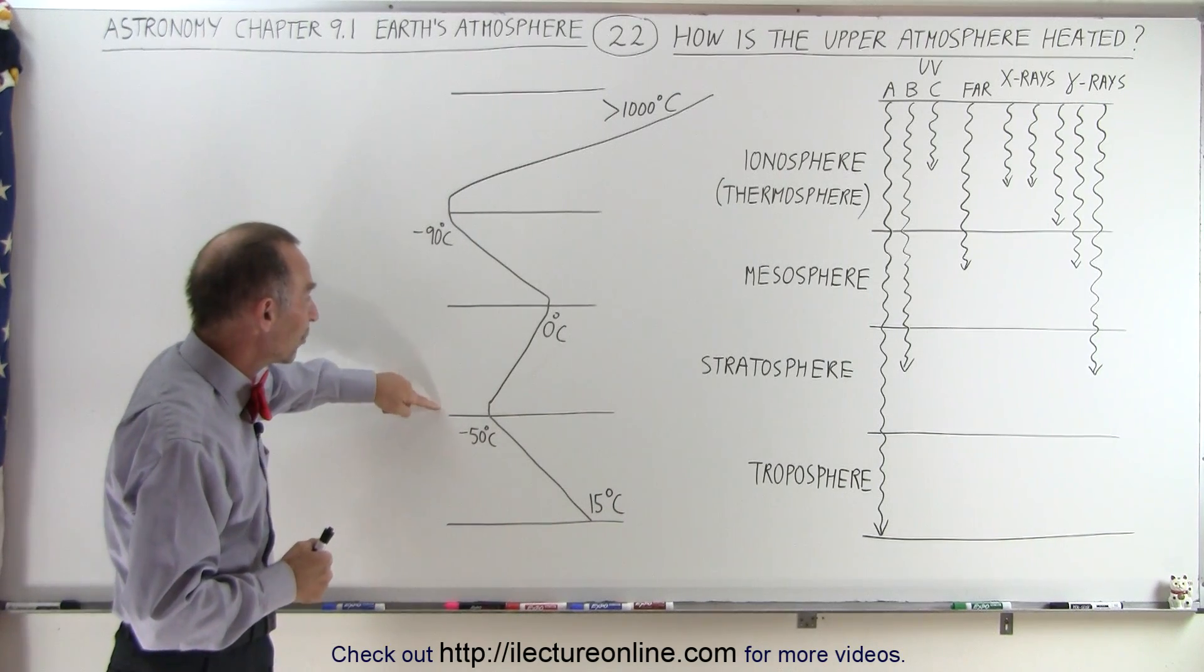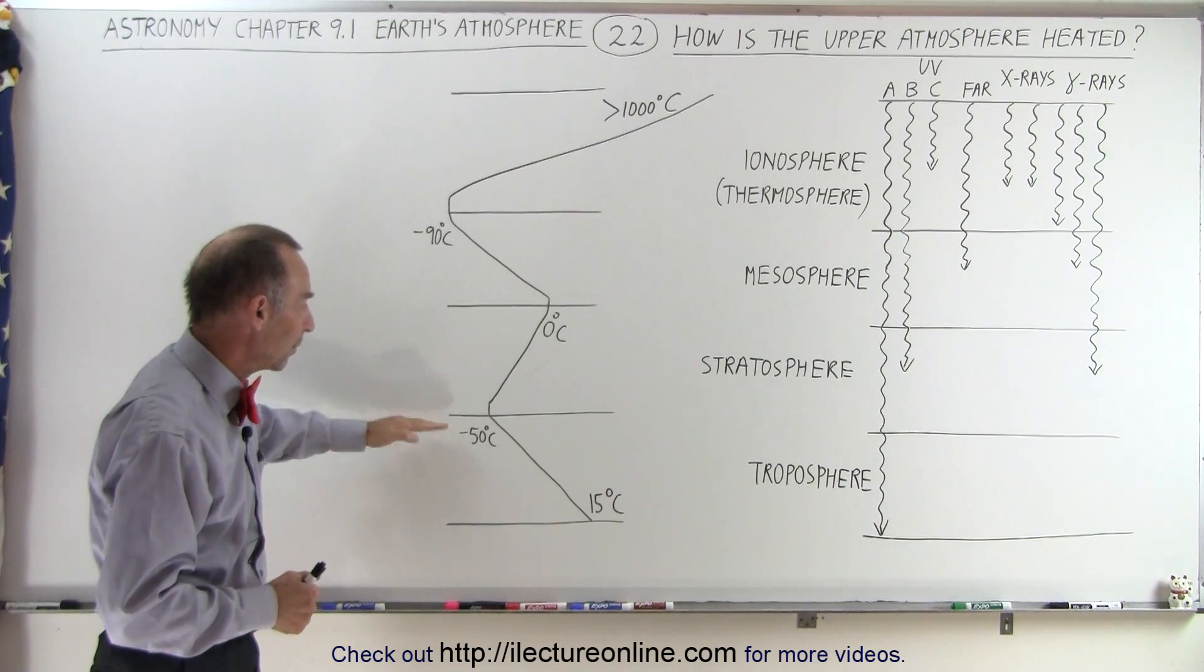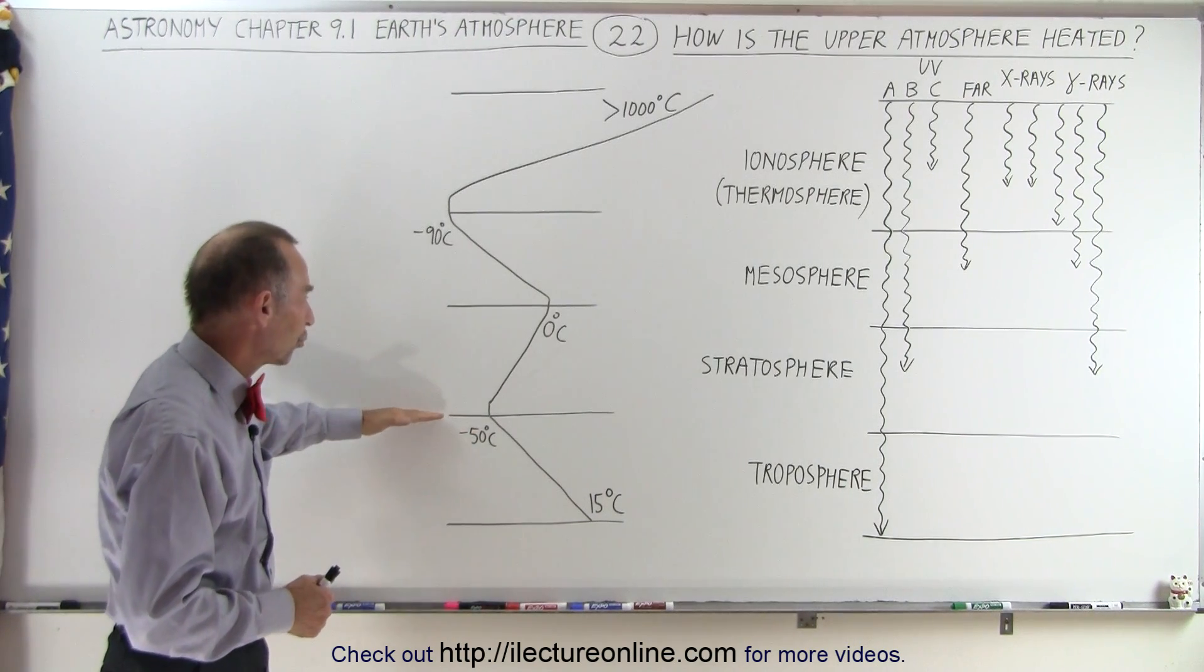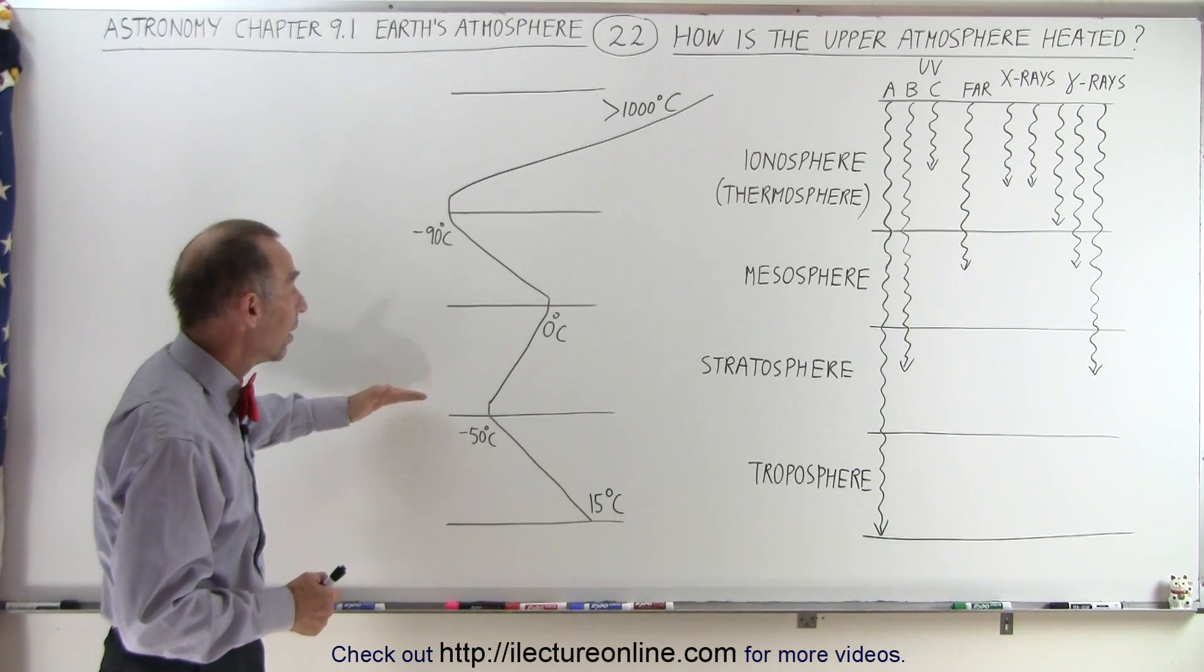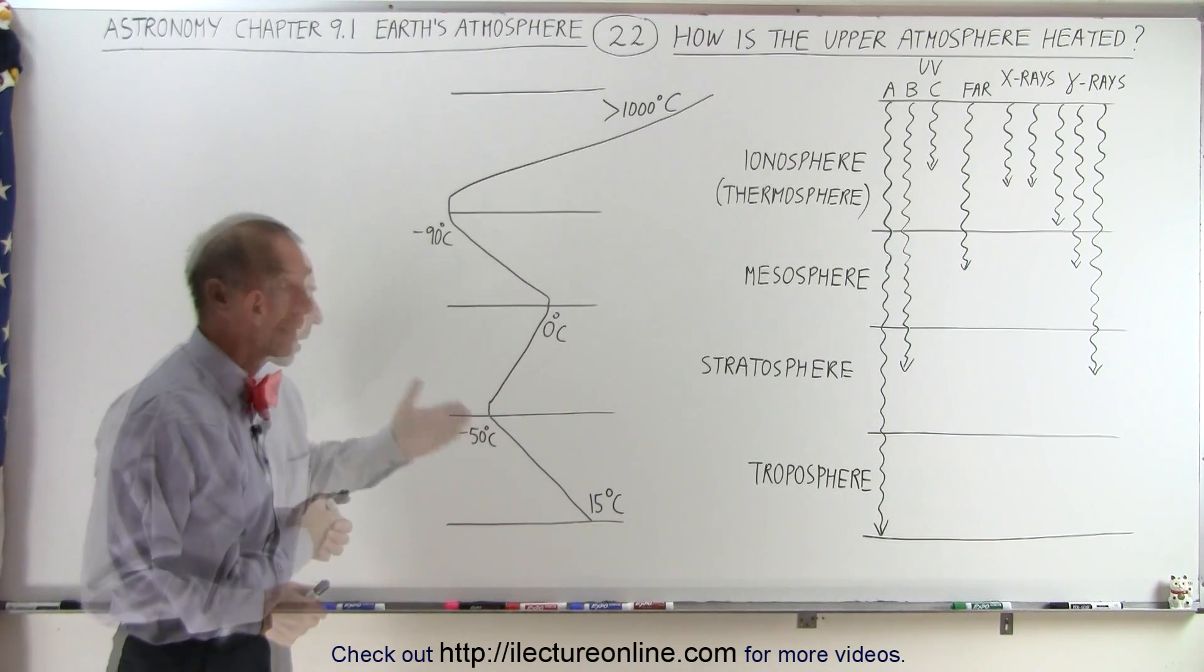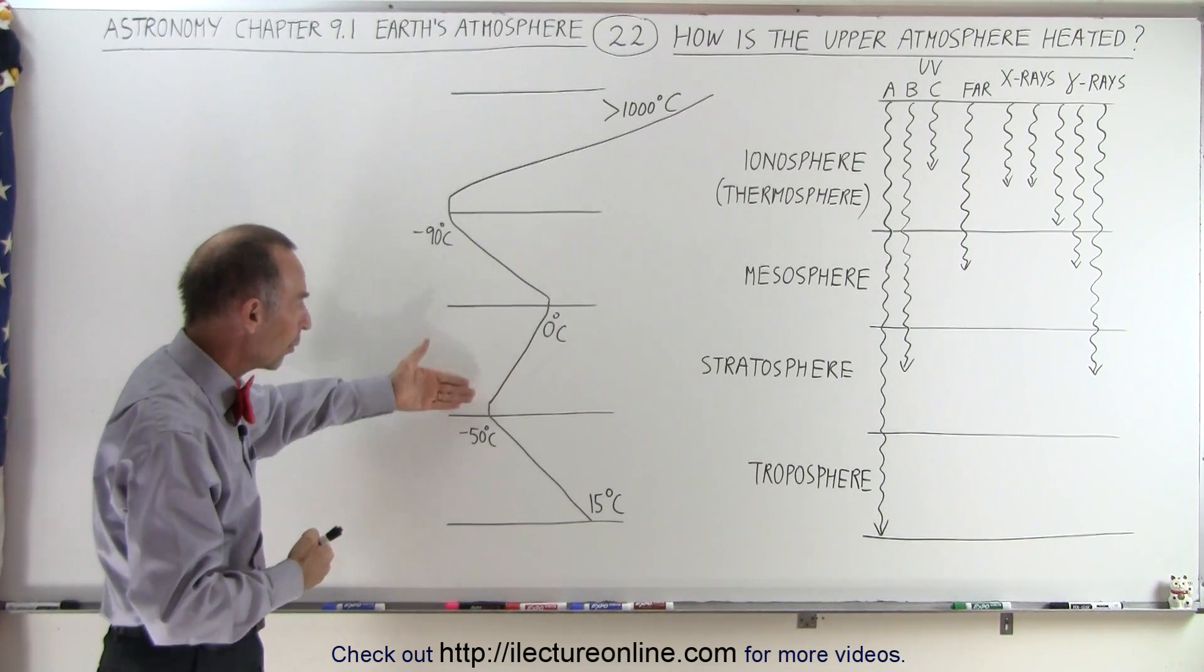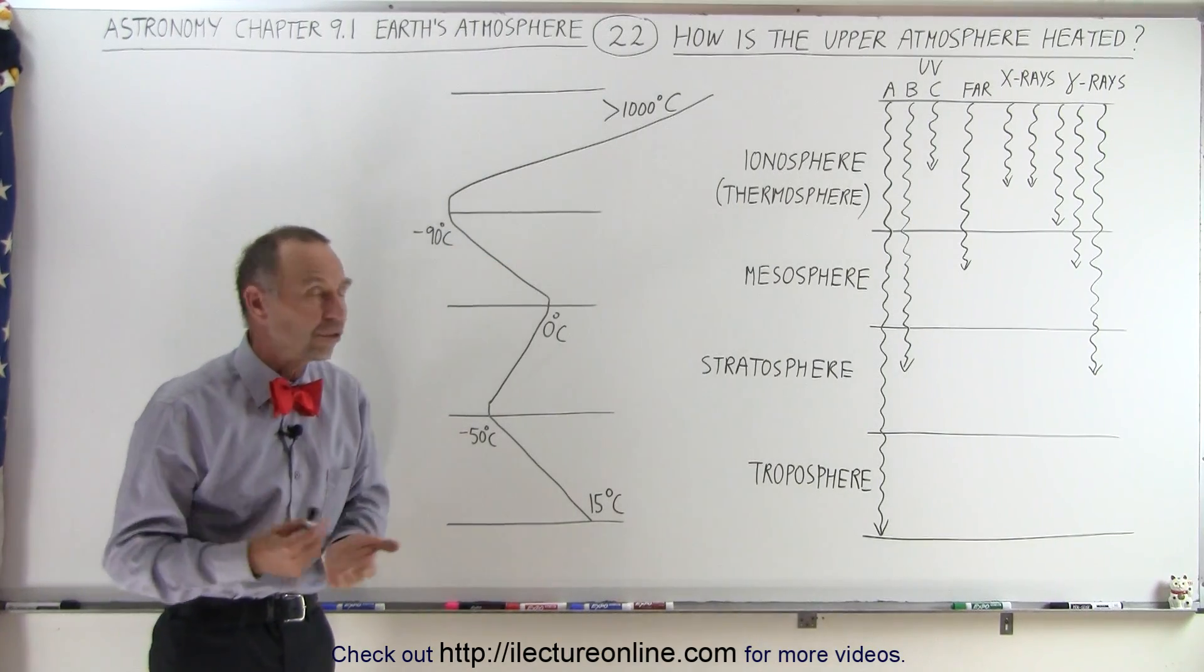We also have a temperature increase here in the stratosphere. By the time we reach the upper troposphere and go into the stratosphere, it can get quite cold around minus 50 degrees centigrade, but then as we go further up we can see that the temperature increases again. Here also heat is absorbed, and we're going to take a look and see why that is so.